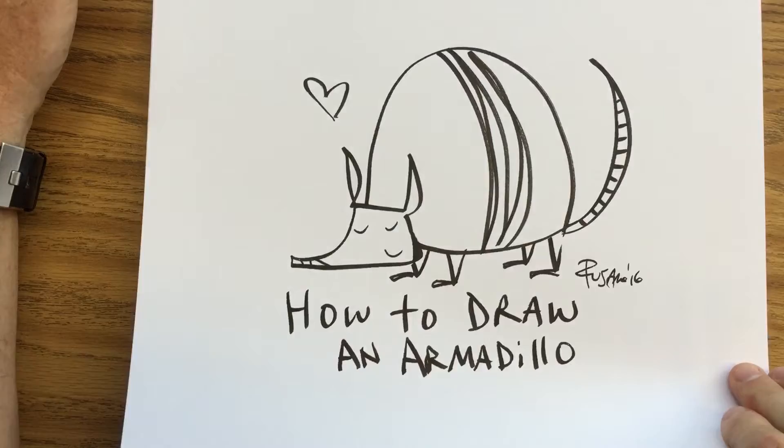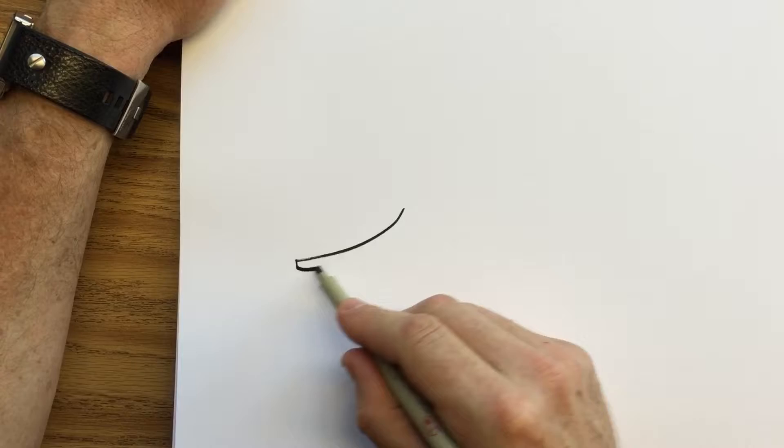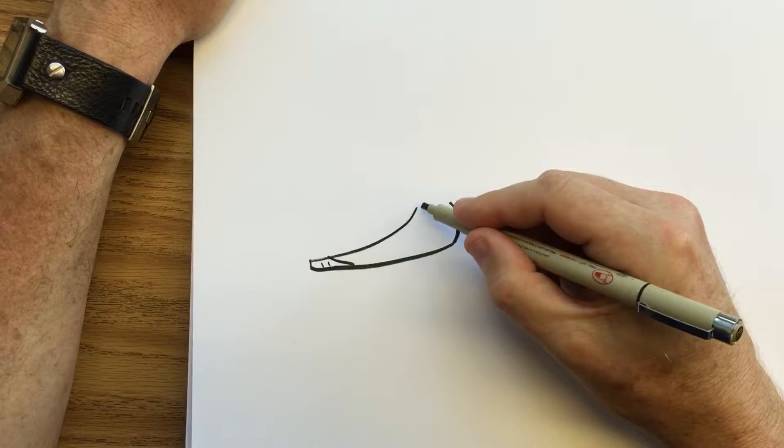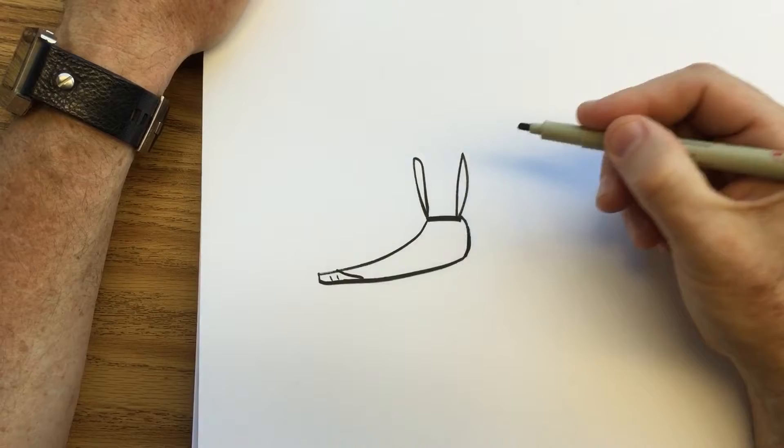Okay, so the first thing we're going to do is draw something that looks like an elf shoe. Doesn't that look like an elf shoe? Then just draw a little line across the top and add two tall, skinny leaves sticking up out of the head.